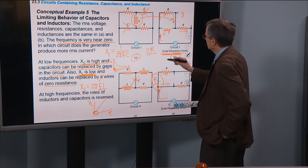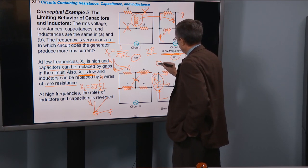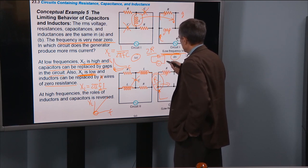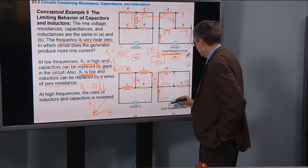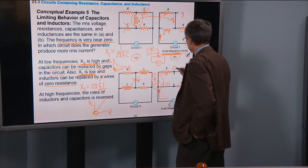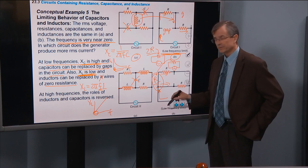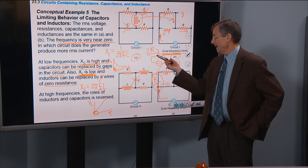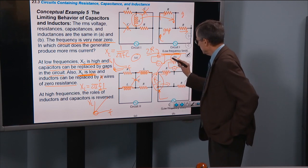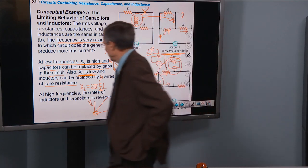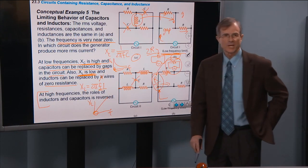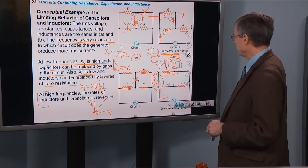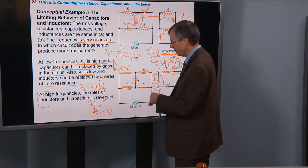In the low frequency limit, circuit B has effective resistance R/2 and circuit A has 2R. The lower resistance means more current, so circuit B generates the higher RMS current. At high frequencies, the roles of inductors and capacitors are reversed: inductors act as gaps and capacitors act as wires.